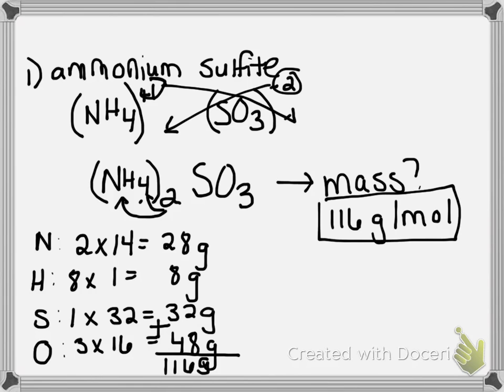Now to figure out the percent composition of each element, it's very simple. To figure out the percent composition of nitrogen, we just need to take 28 and divide it by 116, and then times that number by 100%. So 28 divided by 116 is approximately 0.24, and timesing that by 100 will give us 24%.